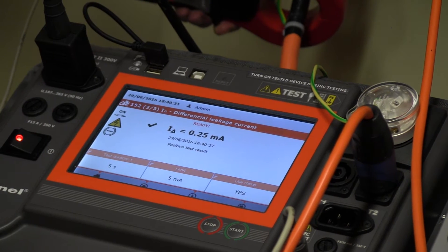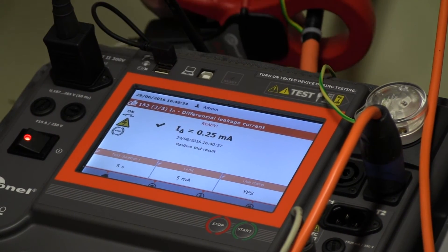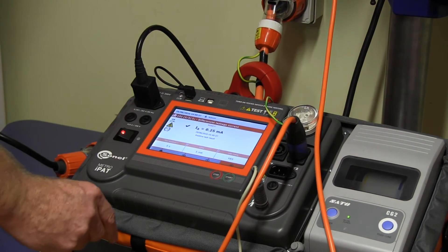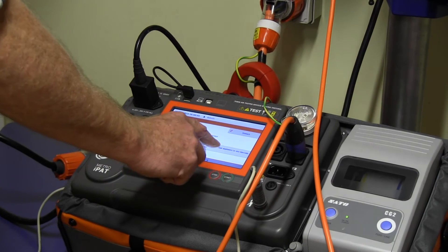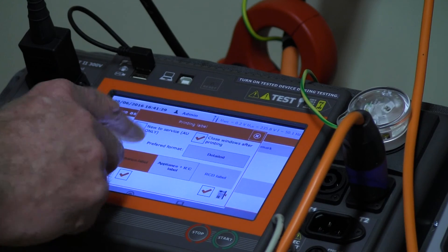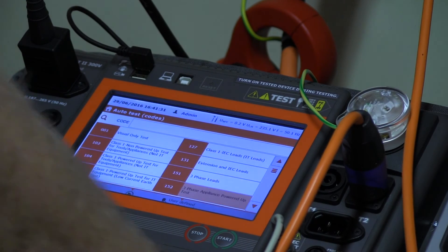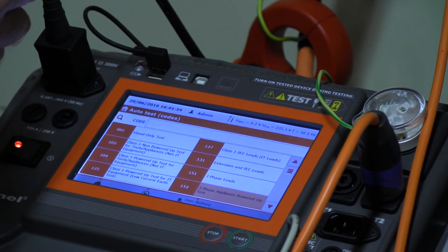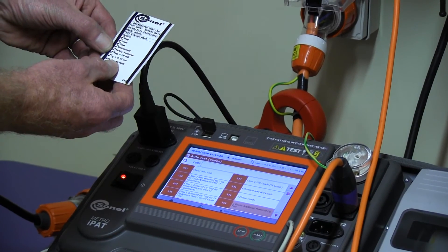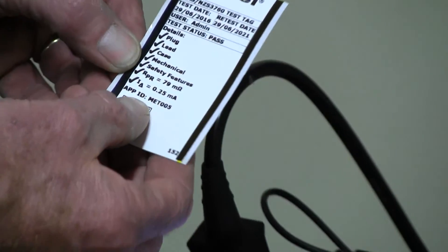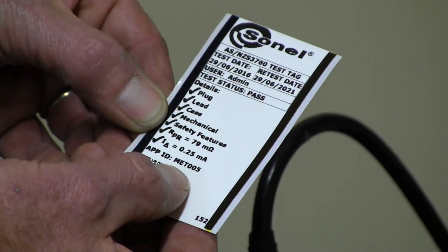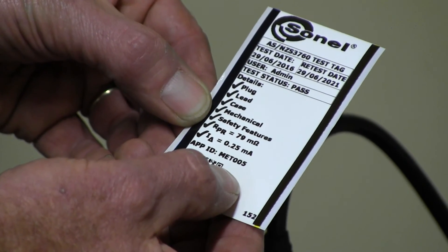It's finished taking the reading. We can print a tag from here. The three-phase tag says that all the safety features were good, the earth resistance was 79 milliohms, and the leakage was 0.25 of a milliamp. That's a complete test for a three-phase appliance.